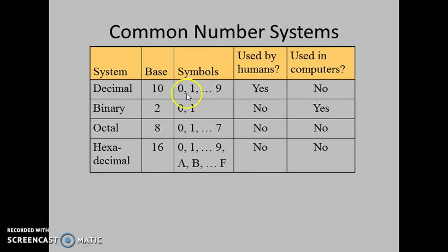Symbols of the decimal number system are 0 to 9, which means a total of 10 symbols. For binary it is 0 and 1. For octal it is 0, 1, 2, 3, 4, 5, 6, and 7.